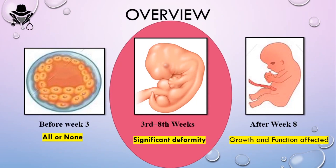Regarding teratogenic drugs and teratogenicity — we know the fetus stays in the womb approximately 38 to 42 weeks. The word 'teratogen' comes from the Greek word meaning 'monster,' reflecting how these drugs affect the fetus. If a drug is present before week three after conception, you can think of this as the very earliest exposure period.